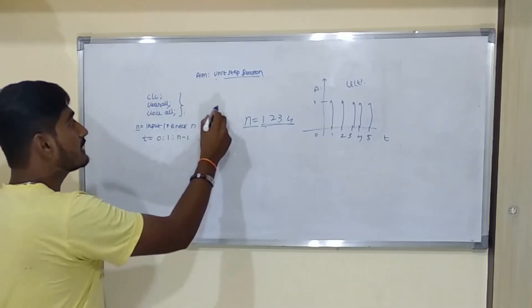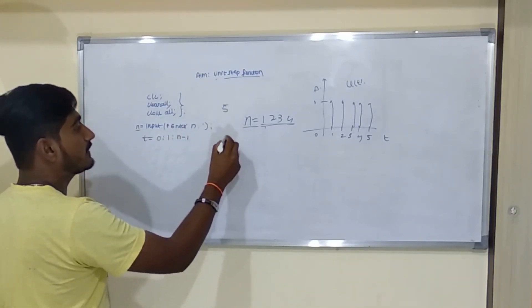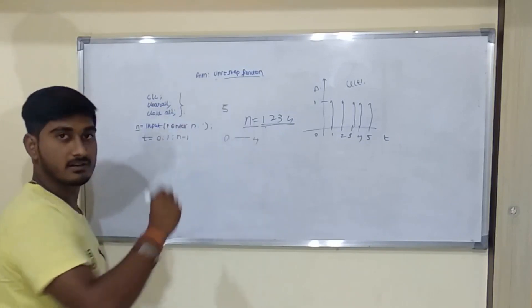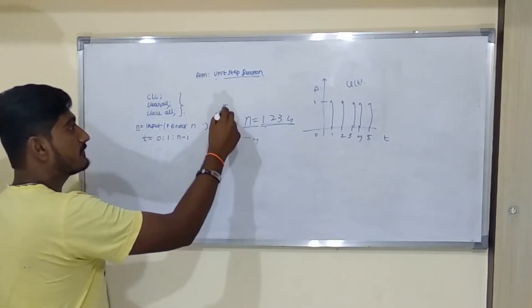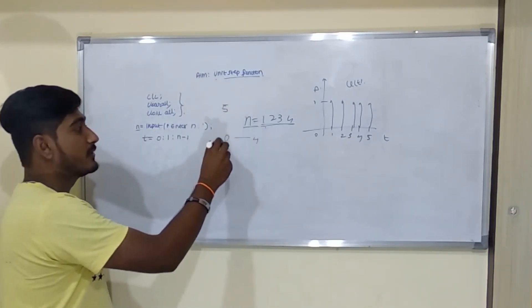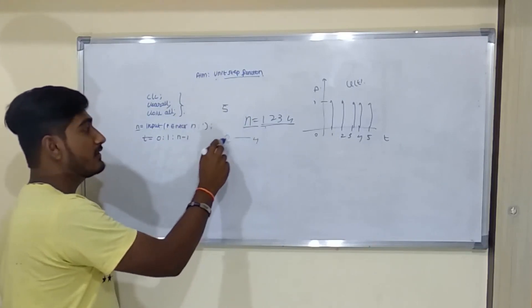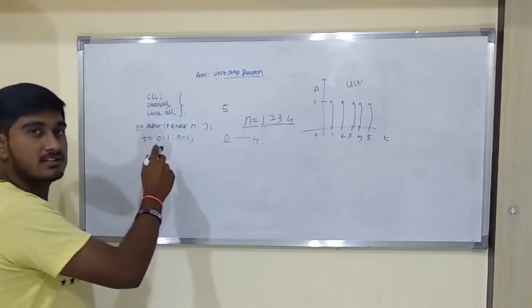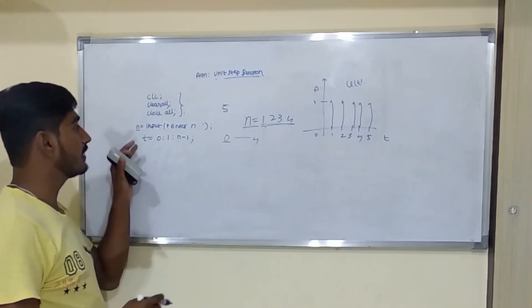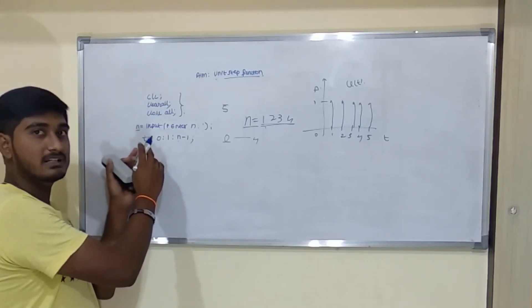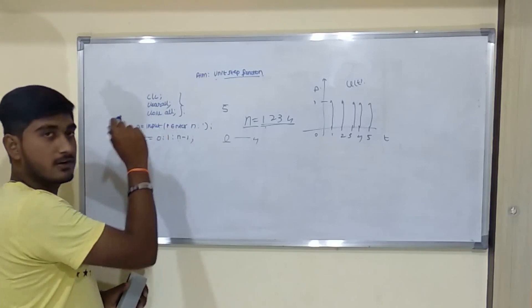So if the user has given 5, it will take from 0 to 4 time interval. So because 0 is included, that's why we will take n minus 1. So after this, time will be initialized according to time matrix. t matrix will be initialized based on the value of n.